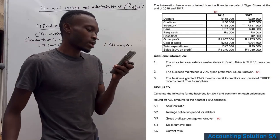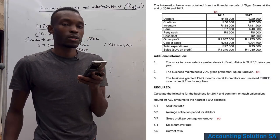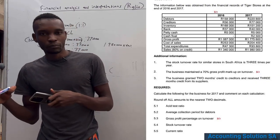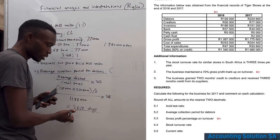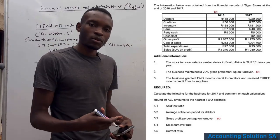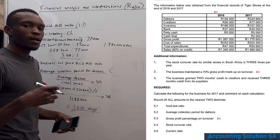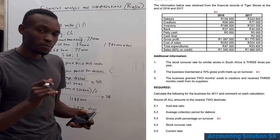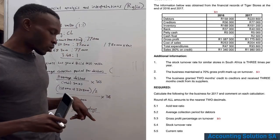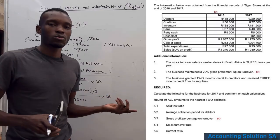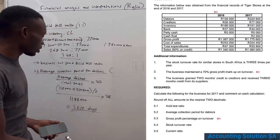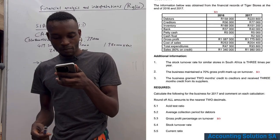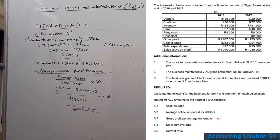The additional information states the business grants two months' credit (60 days) to creditors. Since we collect from debtors within 58 days and our suppliers give us 60 days to pay, this is a good ratio — we have money available to pay our suppliers in time.